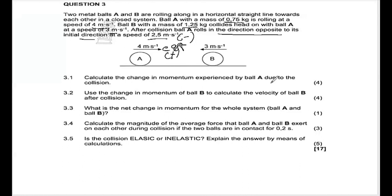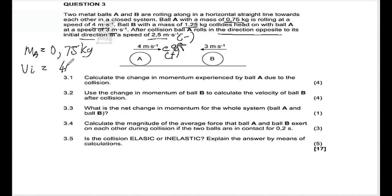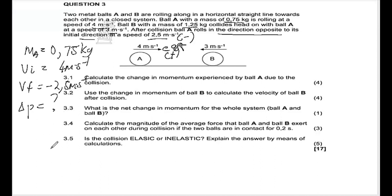Now to calculate the change in momentum experienced by ball A due to the collision, let's collect the data. The mass of ball A is 0.75 kg. The initial velocity is four meters per second, and the final velocity is negative 2.5 meters per second, since it's going in the opposite direction. That's all the data we need to calculate the change in momentum.